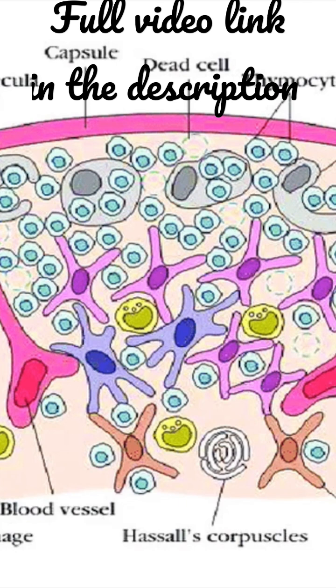The epithelial cells of the thymus are not phagocytic. It has been suggested that the sheath of epithelial cells present deep to the capsule, around the septa, and around the blood vessels, forms an effective blood-thymus barrier that prevents the antigen present in the blood from reaching the lymphocytes present in the thymus.